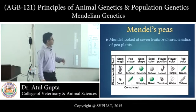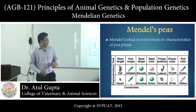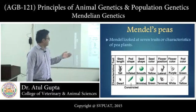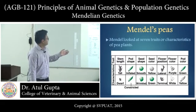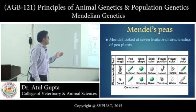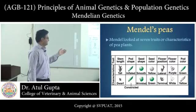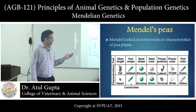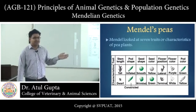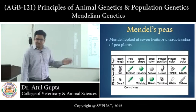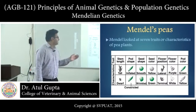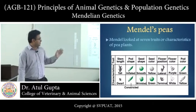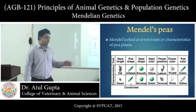Mendel worked on seven traits, as we all know: stem length, pod shape, seed shape, seed color, flower position, flower color, and pod color.